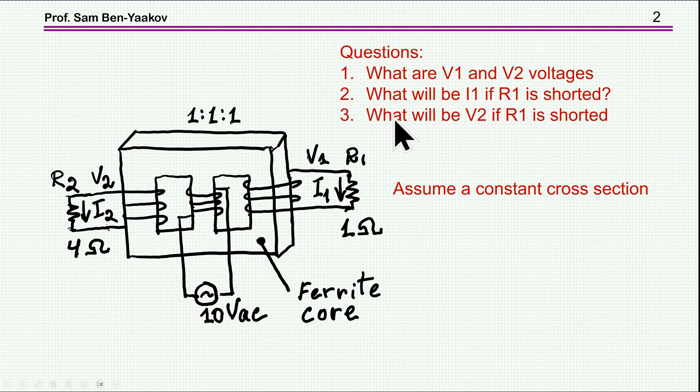The question was, what are V1 and V2 voltages just as it is, with 1 ohm, 4 ohm and 10 volt excitation? Second question was, what will be I1 if R1 is shorted? And the third one was, what will be V2 if R1 is shorted? And there is an assumption that there is a constant cross section. Of course the ferrite has high permeability and there is no saturation. So it is a normal operating point.